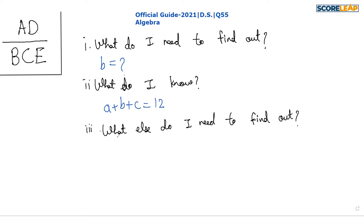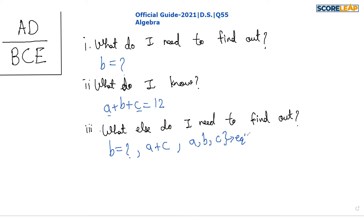What else do I need to find out? If I simply get the value of b, or if I get the value of a + c, then I can substitute it and find out the value of b. Or if I get two more equations in terms of a, b, and c, then also I can figure out the value of b — because with three equations and three unknowns, we can easily solve it.